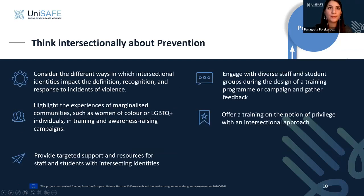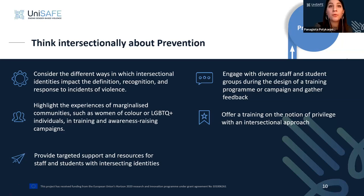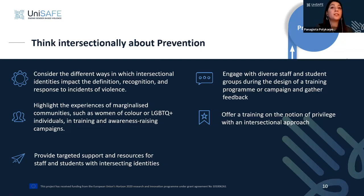When considering intersectionality in prevention measures, consider the different ways intersectional identities impact the definition, recognition, and response to incidents of gender-based violence for different groups. When offering trainings, highlight the experiences of marginalized communities. When designing campaigns, provide targeted support and resources for staff and students with intersecting identities — this could be offered in different languages or formats such as Braille writing.